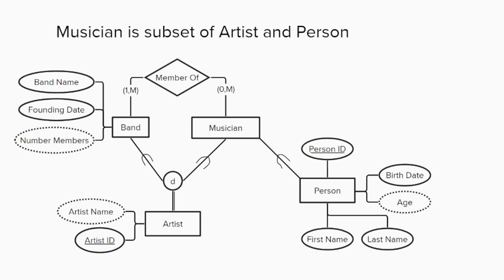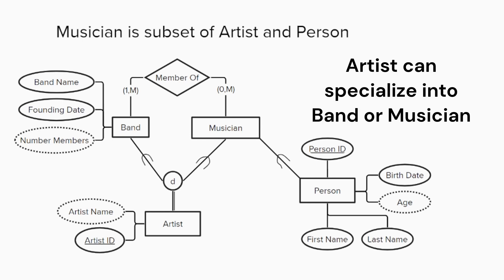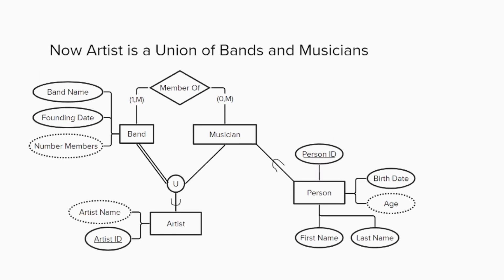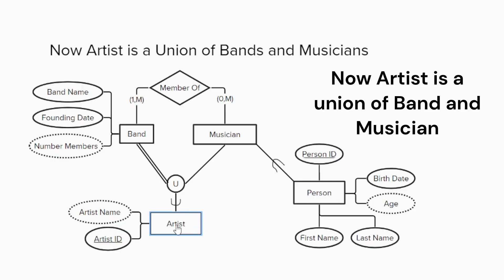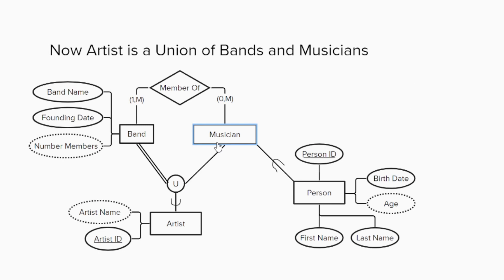The final feature of the extended entity relationship model that we will discuss is a union, which is one category from a selection of multiple supersets. In other words, an entity can be specified as being a subset of one and only one of several supersets. The use of a union is an alternative to using multiple subset specializations, so I will change this diagram into this new diagram. In this version, the artist is a union of bands and musicians. This change means putting the union symbol, which looks like a capital U, inside the specialization circle and drawing the subset symbol on the line from artist to the circle.